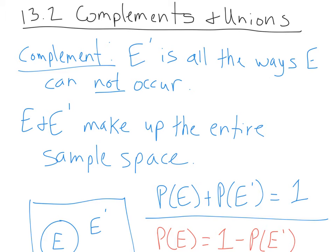Hey everyone, this is 13.2: Complements and Unions. We're going to talk about a little bit of basic set theory and start with complements. The notation for this: if E is an event, this little E-prime stands for E complement. Sometimes in older or different notation you might see a little C superscript, but for our course and MyMathLab you'll see the prime.